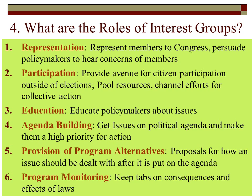Number five is provision of program alternatives. Interest groups can give proposals for how an issue should be dealt with after it's put on the agenda. Perhaps they didn't put it on the agenda — there's already a bill about Save the Pandas, and Save the Whales has an idea of how that issue should be dealt with. This is another form of influence: telling the member how they want them to vote or react to a particular issue that is already there.